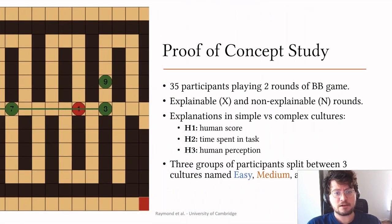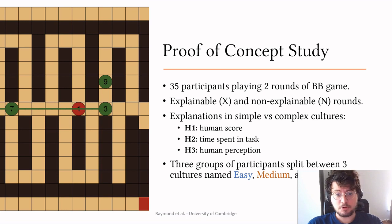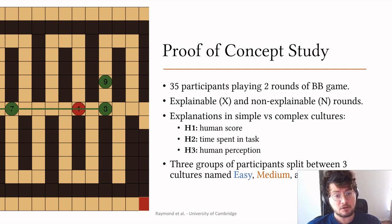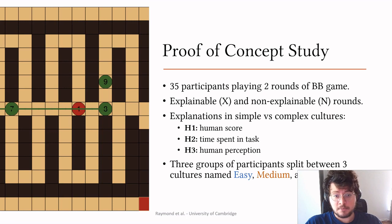The study was performed on a group of 35 players who each played the game twice — once with explanations in the form of hints and once without. The ordering was alternated. Participants were divided into three groups, each playing one of three types of cultures: the easy one with two properties and two rules, the medium with four properties and four rules, and the hard one with six properties and nine rules. We are interested in observing the benefit the explainable round brings compared to the non-explainable one across different difficulty levels. We hypothesize that explanations bring a larger benefit in harder levels, measuring human performance, time spent on task, and human perception. We also performed a subjective experience questionnaire at the end.